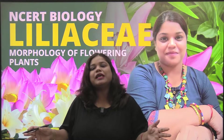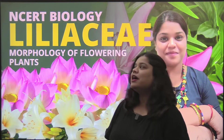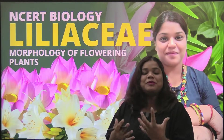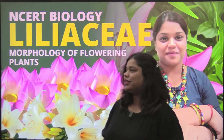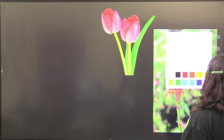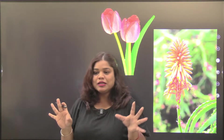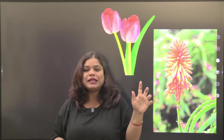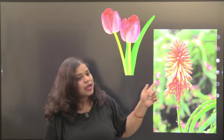Hi everyone and welcome to Neet Now, your NCRT destination. We are talking about chapter 5 and continuing it. Today is the last lecture from Morphology of Flowering Plants, which is your family Liliaceae. This is one of the most beautiful families. The most beautiful flowers that you get are from Liliaceae — this is obviously your tulip, and this is the aloe vera flower.